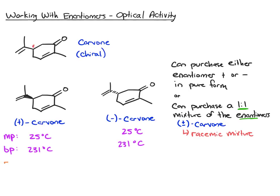We often abbreviate optical rotation as alpha D20. The D refers to the type of lamp used, and the 20 is the temperature. There's an instrument called a polarimeter that you can put a solution of a chiral molecule into, and it measures how the light gets rotated.